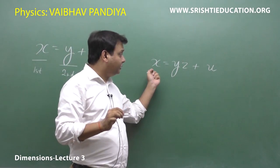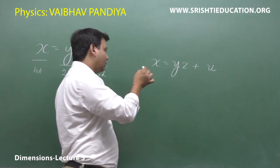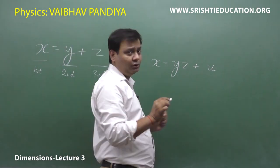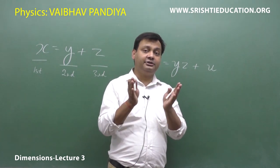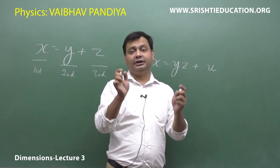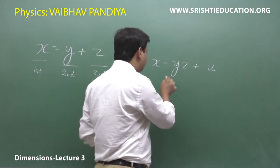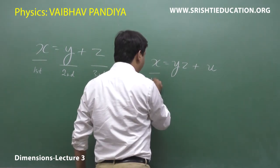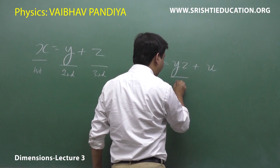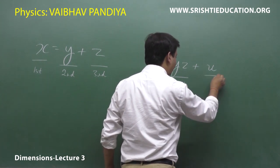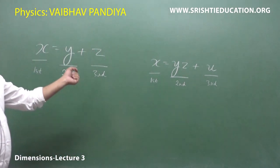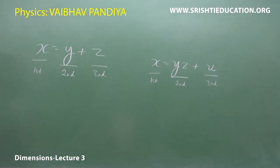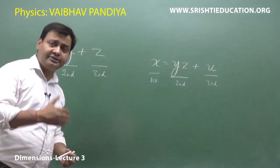Consider the equation x is equal to y times z plus u. We know from basic mathematics that multiplication and division do not split a term. So which term is first, which is second, and which is third? We have three terms in the equation: the first is x, the second is yz, and the third is u.